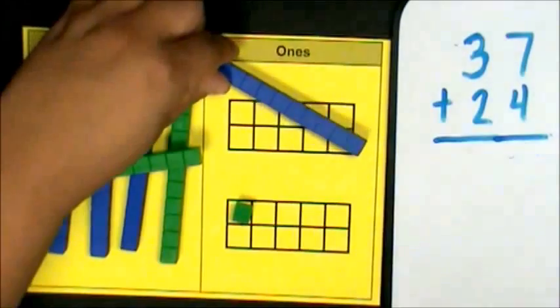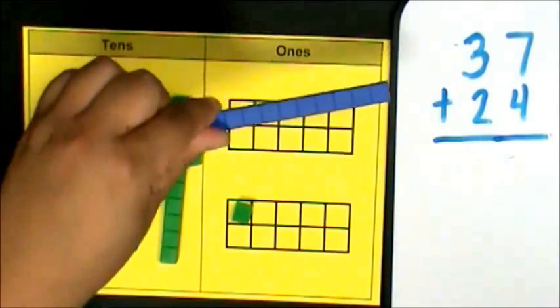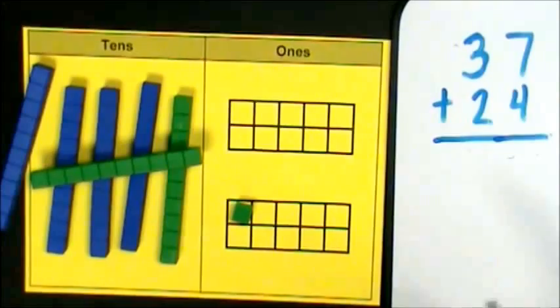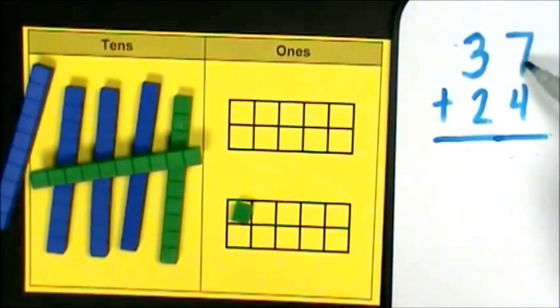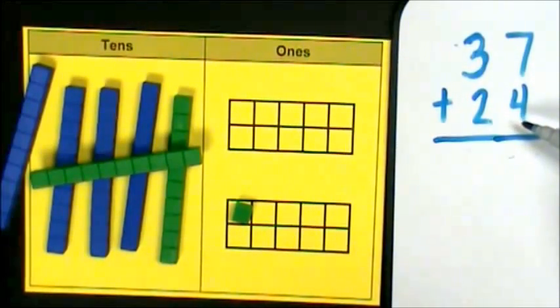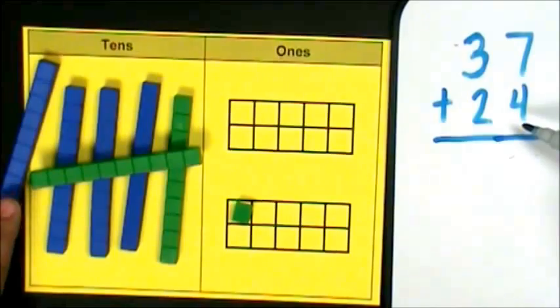I will place my 1 ten in the tens place. 7 ones plus 4 ones was 11 ones, but I regrouped and moved my 10 to my tens place.